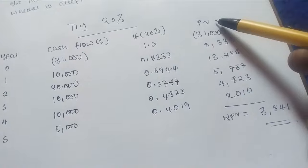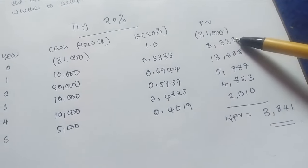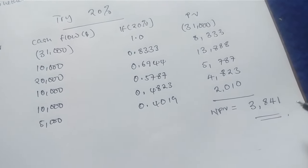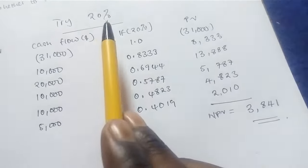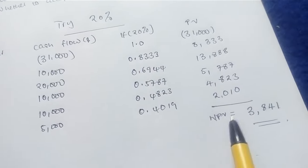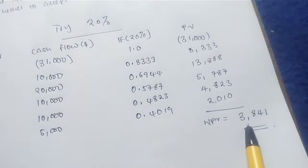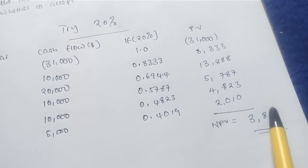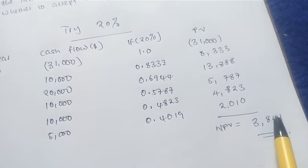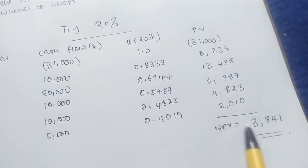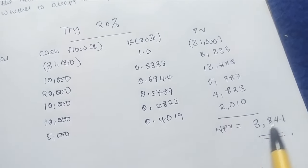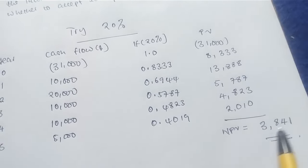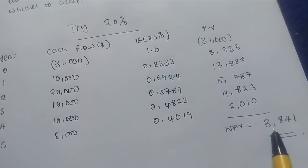The same technique used in computing the net present value is the very same one used here. We realize that increasing the rate to 20% has led to a reduction of the net present value, but our aim is to ensure that we get a zero net present value. In most cases that cannot be achieved exactly, so we have to find a negative NPV first, and then we can do the interpolation.